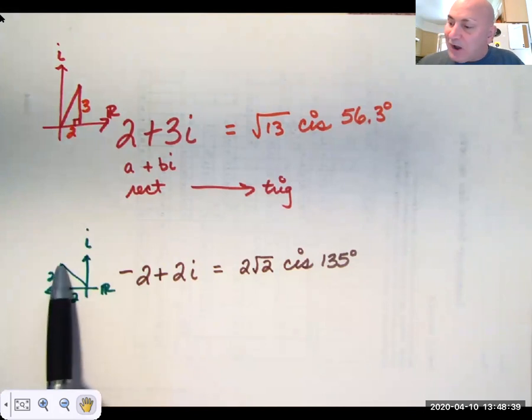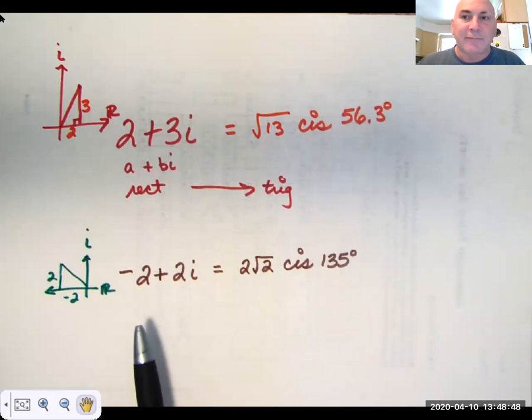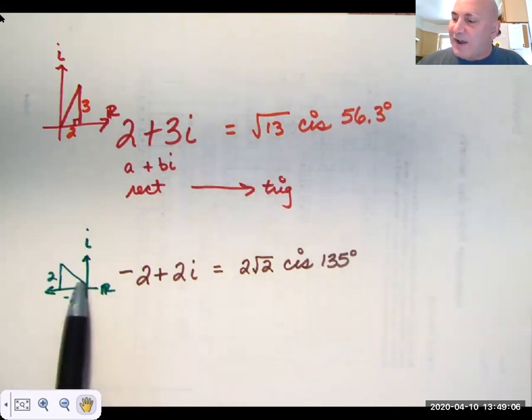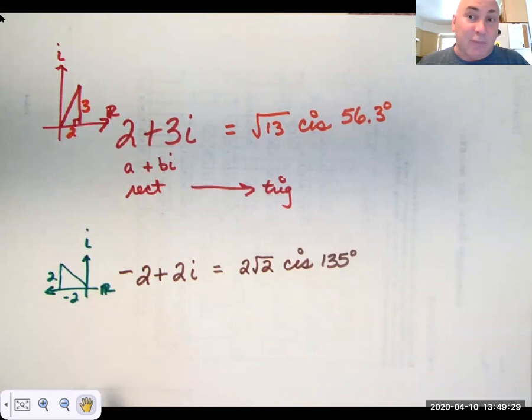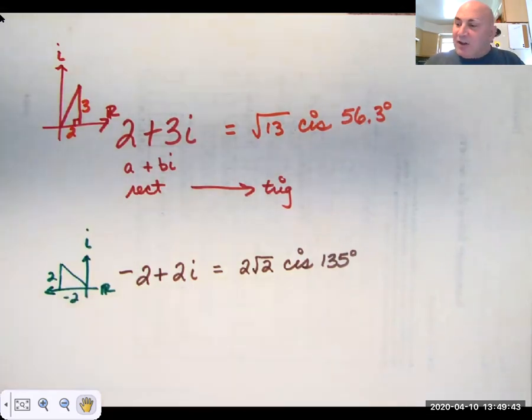Now, here we have negative two plus two I. Where did this two root two come from? Well, negative two quantity squared plus two quantity squared is eight. Square root of eight is two root two. So this distance here, this hypotenuse, is two root two. Where did the 135 degrees come from? Well, you take the arc tangent of two over negative two, and that would give you an arc tangent of negative one. And that would give you negative 45 degrees. But you can tell by looking that we're in the second quadrant, not the fourth. So negative 45 degrees has a 45 degree reference angle. What second quadrant angle has a 45 degree reference angle? Well, that's going to be 135 degrees.